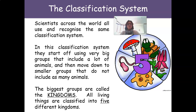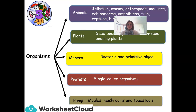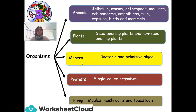In this classification system, they start off using very big groups that include a lot of animals, and then move down to smaller groups that do not include as many animals. The biggest groups are called the kingdoms, and all living things are classified into five different kingdoms. Can you remember what those five kingdoms are? We have animals, plants, Monera — which are our bacteria and primitive algae — our protists, which are single-celled organisms, and our fungi: moulds, mushrooms, and toadstools. In Grade 7, we look in detail at the animal and plant kingdoms.